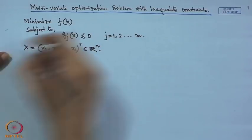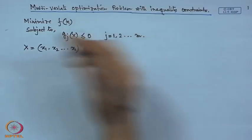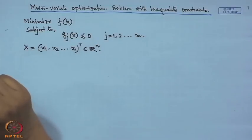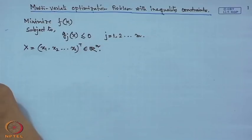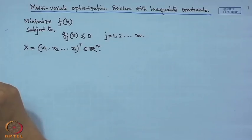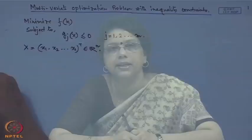We are considering the functions f(x) and g_j(x), which are all non-linear and continuous in nature. We will develop the necessary conditions by adopting the Lagrange multiplier technique and extending it to Karush-Kuhn-Tucker (KKT) conditions.